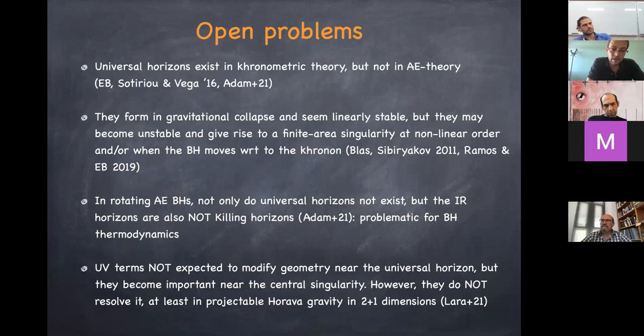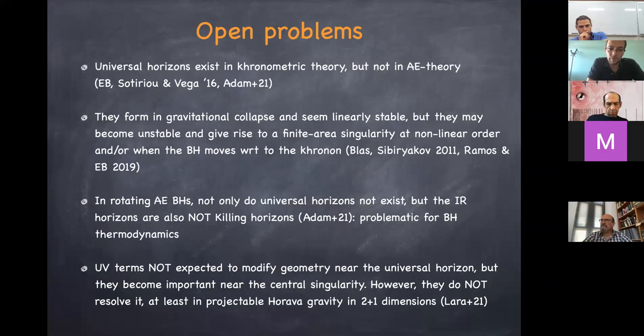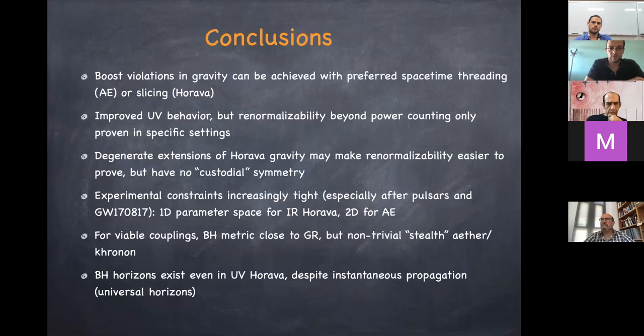The effect of the UV terms — L₄ and L₆, the fourth- and sixth-order spatial derivative terms crucial for renormalizability in Hořava gravity — on the central singularity of the black hole is also an open problem. They are expected to resolve the central singularity but do not seem to do so in simple settings. So the fate of the central singularity in the presence of a renormalizable theory remains unclear. I'll stop here and am happy to take questions.